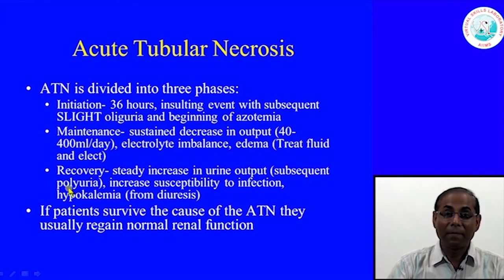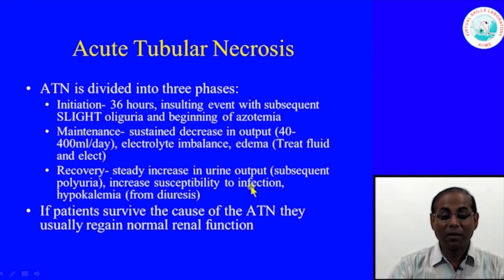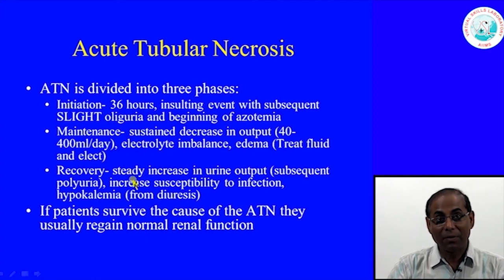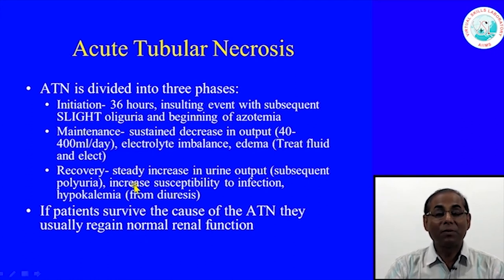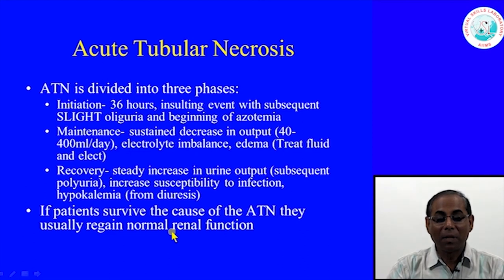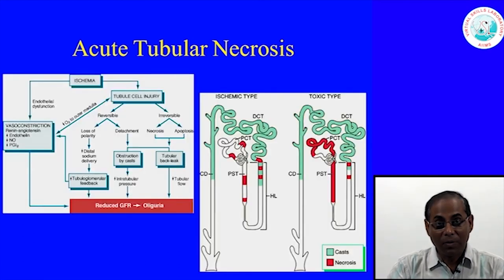In the recovery phase, if the injury is no longer progressive, there is a steady increase in urine output with subsequent polyuria, increased susceptibility to infection, and hypokalemia due to excessive diuresis. This is because full tubular function is still yet to be recovered, leading to decreased water absorption and abnormal electrolyte reabsorption. If the patient survives the cause of ATN, they usually regain normal renal function within a few weeks.